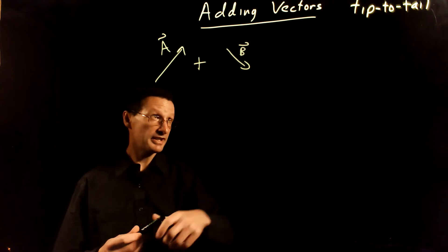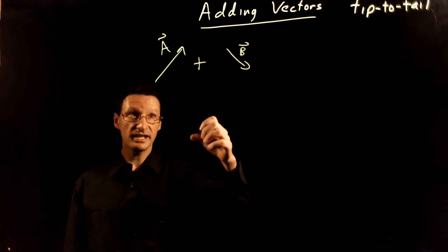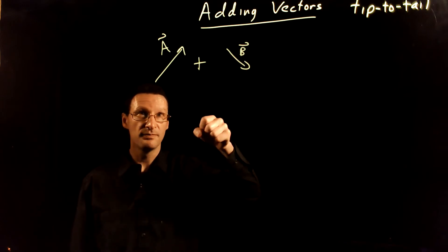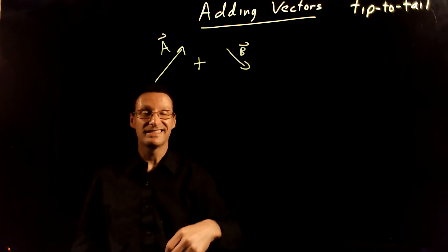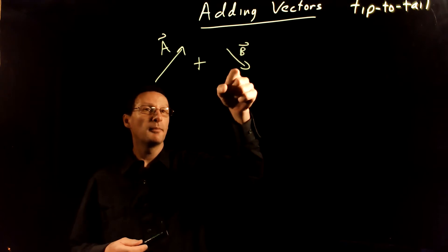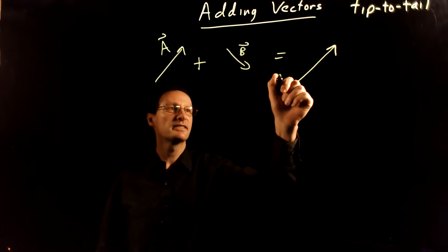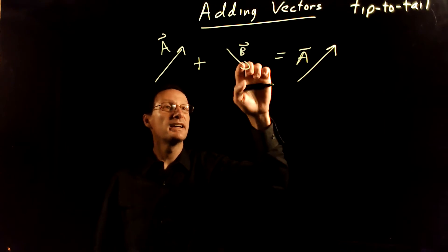Well, as the tip-to-tail method suggests, you take the tip of one and put it at the tail of the other one. We want to do A plus B. So let's draw A first like this. And then we'll take B.